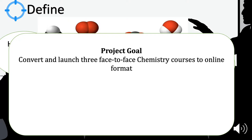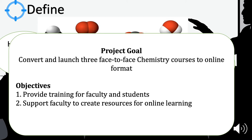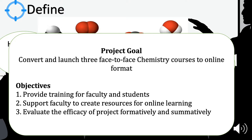In a period of almost three months, three chemistry classes will be converted to online format and will be launched by the beginning of the fall semester. The goal is broken down into three objectives: provide learning training for faculty and students, support faculty and create resources for online learning, and evaluate the effectiveness of the project formatively and summatively.